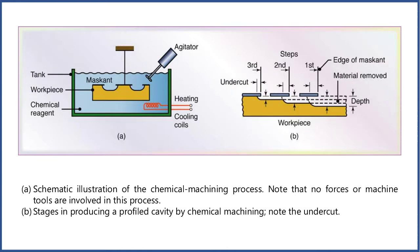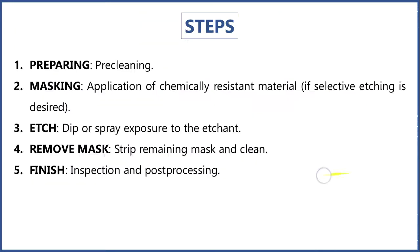Now let us move to the process of chemical machining. As shown in the schematic illustration, there are no forces or machine tools involved in this process. There are different stages in producing a profile cavity by chemical machining, and there may be undercut involved.